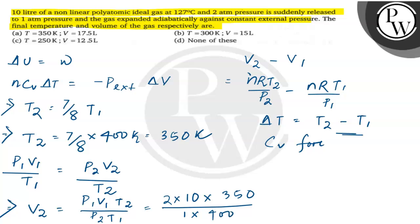So the temperature drop is 50 Kelvin and the volume will be 17.5 litres, which is given in option A. The correct answer is option A. Thank you.